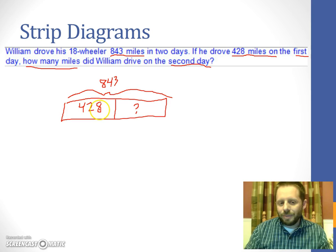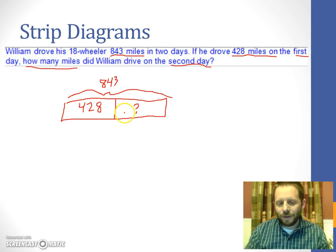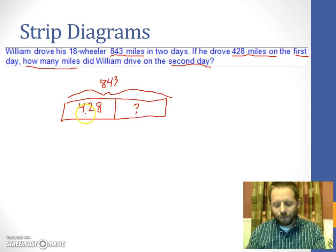By setting it up this way, it helps us to see that this must be a subtraction problem. Because we're trying to figure out what number plus 428 equals 843. Well, the easiest way to find out what that number is, is by subtracting the 428 from the 843 and seeing what's left. We're using a strip diagram to model the problem to help us see or come up with a plan of how to solve that problem. What strategy you use to subtract, that's up to you.